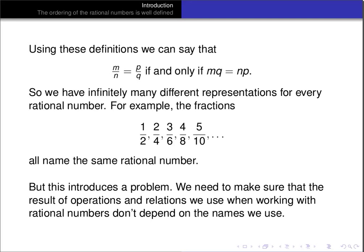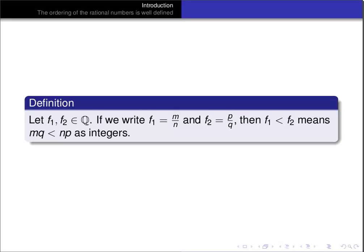So if these names all truly denote the same rational number, then the result of adding, the result of multiplication, and the result of comparing with less than ought to always come out the same regardless of what name we use. Let's define our order and then deal with that problem by proving it's well-defined. If we let f1 and f2 be rational numbers, and write f1 as m over n and f2 as p over q, then f1 less than f2 means that m times q is less than n times p as compared in the integers.